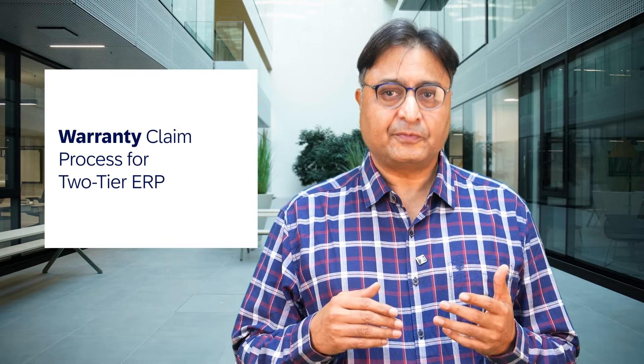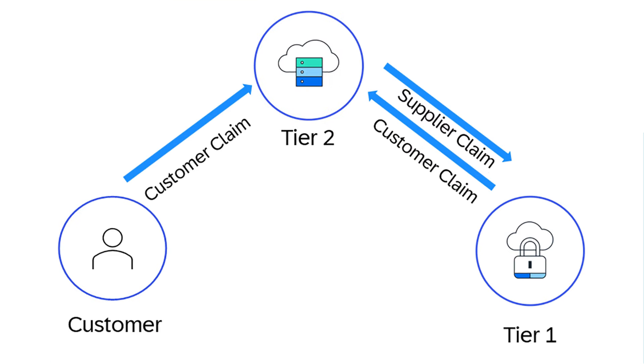In the next two-tier ERP warranty claims scenario, we have Tier 2, a subsidiary company running on SAP Sperana Cloud Public Edition, which primarily serves as an after-sales service agency for equipment sold to the customer from the headquarters. Here, headquarters play the role of vendor for the service organizations at the subsidiary.